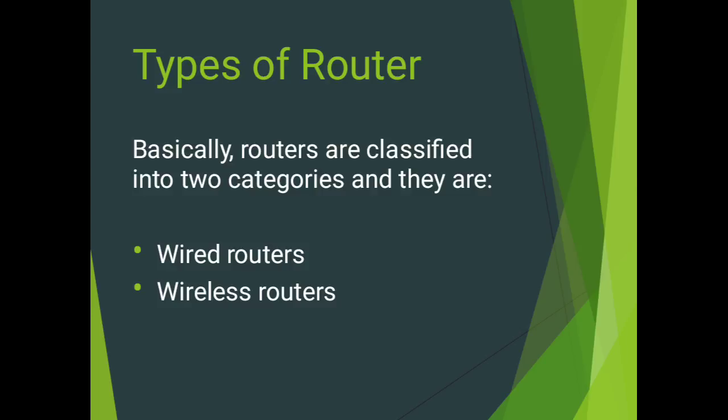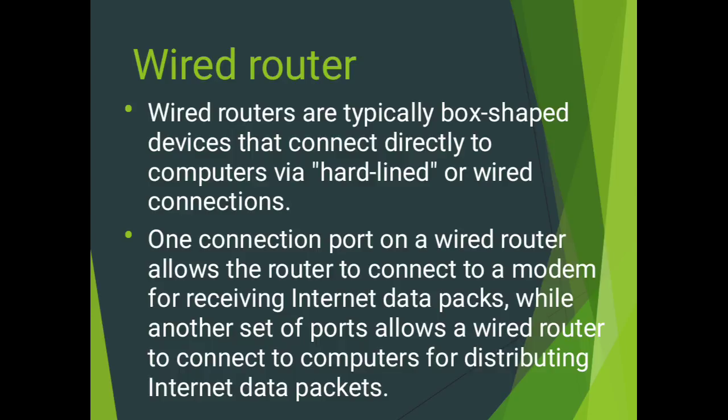Moving on to our last topic — types of routers. Routers are classified into two categories: wired routers and wireless routers. The first one is the wired router. Wired routers are typically box-shaped devices that connect directly to computers via hardline or wired connections.